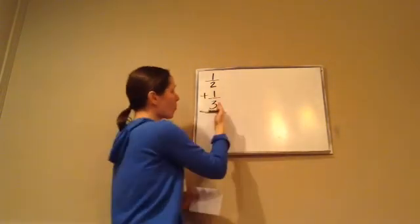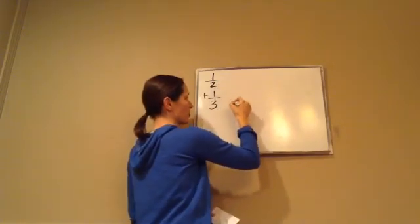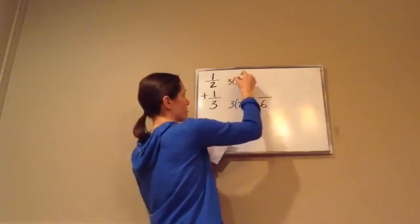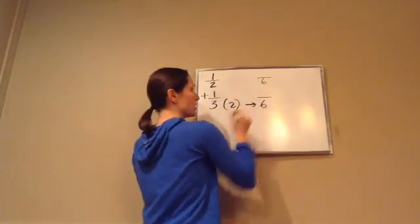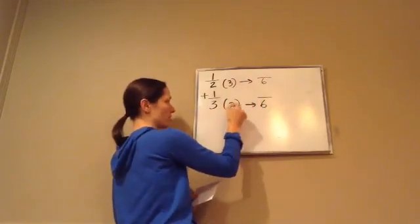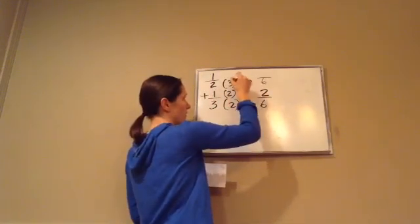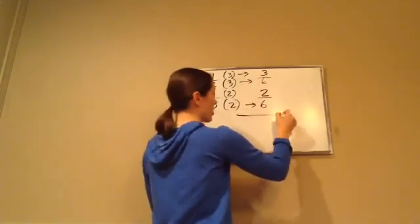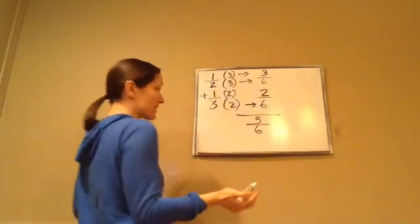What would I do here to try to come up with a common denominator? When you're adding fractions, you have to have a common denominator. We would take 3 times 2 and get 6 as our common denominator. Just like I times it by 2 to get 6, and times this one by 3 to get 6. 3 times 2 is 6 — what you do to the bottom, you have to do to the top. 1 times 2 is 2. 2 times 3 equals 6, so 1 times 3 is 3. To answer this problem, 3 plus 2 equals 5, and 6 is our denominator.